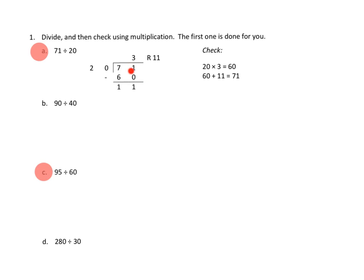Three groups of 20 would mean that we've used up 60 from our whole. Once we do our subtraction, 71 minus 60 would give us 11. And we can't divide 20 into 11 anymore, so that's our remainder.